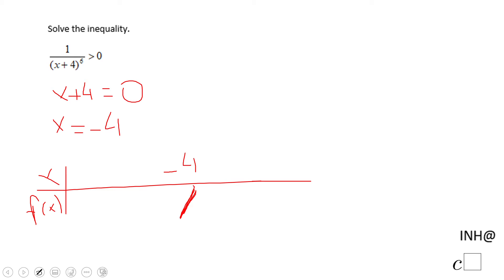If I put here negative three, I'm going to end up with one over a positive number. A positive number raised to the sixth power will be a positive number, so we have here a positive outcome.